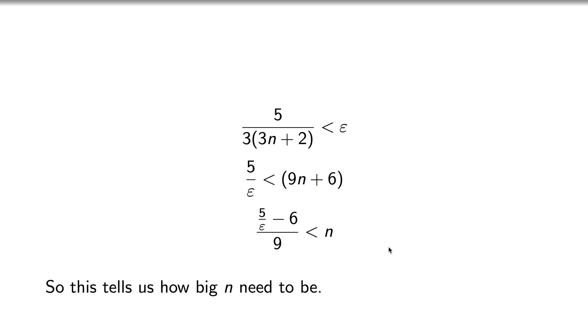If you think about it, these steps can be reversible. Everything we've done, we could reverse. So the fact that 5 over 3 times (3n plus 2) is smaller than epsilon, that's going to happen if and only if n is bigger than this quantity. So that will come into play a little bit later in our proof.